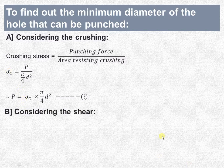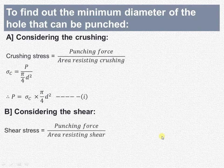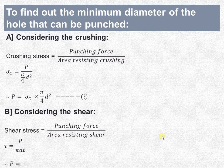Now consider the shear. The shear stress induced will be equal to the punching force divided by the area resisting shear. Shear stress is denoted by τ or f_s, punching force is P, and the area resisting shear is the perimeter into thickness, that is π d t. Cross-multiplying, P is equal to τ × π d t.